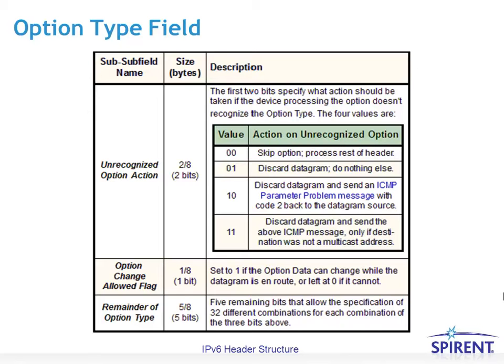This gives an example of some of the encoding of the option type field. There are a couple of bits used to specify the action upon receiving an unrecognized option, whether or not the option can be changed, and then the remainder of the option type.